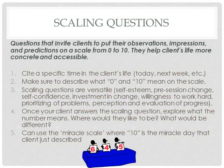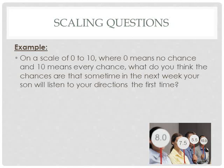You can also use the miracle scale, where instead of 0 meaning something generic and 10 meaning something good, you use the miracle question you just asked. Since you painted that canvas in vibrant colors, you can say, 'Where 0 means you have no hope at all for being able to accomplish this, and 10 is that miracle day that you described — every single thing you mentioned is a 10 — where are you?' This allows you to get another angle using a scaling question. For example: 'On a scale of 0 to 10, where 0 means no chance and 10 means every chance — what do you think the chances are that sometime in the next week your son will listen to your directions the first time you ask?'